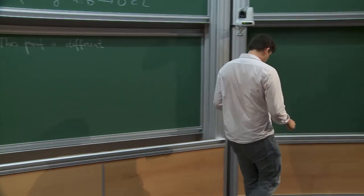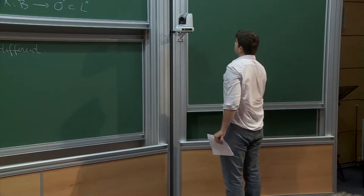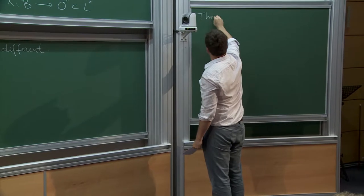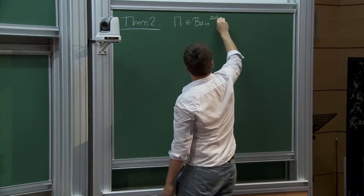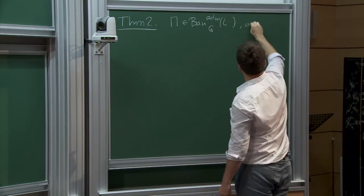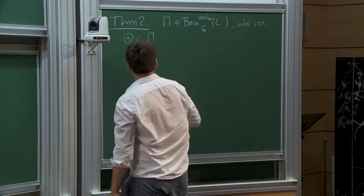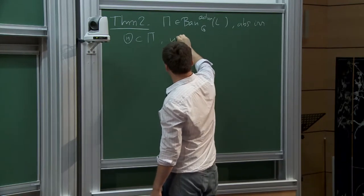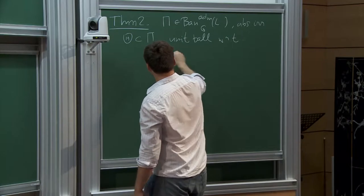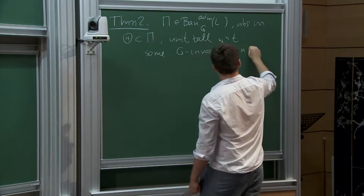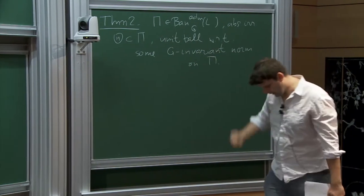What I want to explain today is a part of the argument. Let me call this Theorem 2: if I have π, such a Banach space representation, and I assume it's absolutely irreducible, then I choose some Θ inside π — this is the unit ball with respect to some G-invariant norm on π. Because this representation is unitary, such a norm exists, and I pick one; the unit ball is called capital Θ.